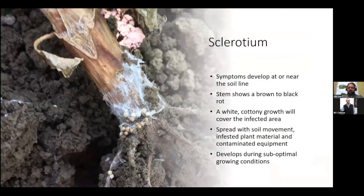The last one I want to talk about is Sclerotium. This is a disease that appears like Rhizoctonia when it first starts, with a brown to black rot at the soil surface. But one thing that's very different is you will see a white cottony growth cover the area. It is also spread with soil movement of infested plant material and contaminated equipment, and it typically develops during suboptimal growing conditions, also preferring warm, humid conditions.